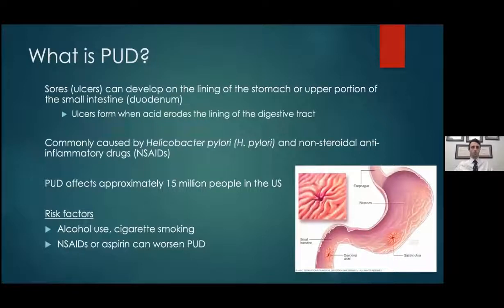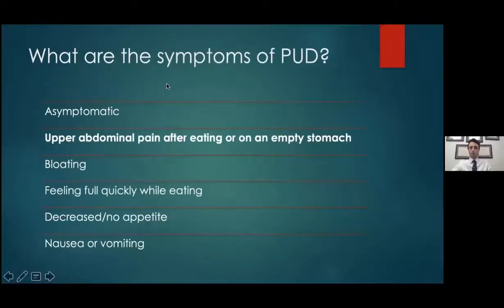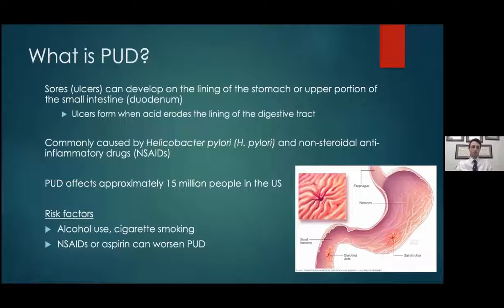What is peptic ulcer disease? Ulcers can form anywhere in the GI tract, but here we're talking about ulcers that develop in the lining of the stomach or the first portion of the intestine — the duodenum — occurring when acid erodes the lining of the GI tract. There are two major causes: H. pylori (Helicobacter pylori), which is a bacteria, and NSAIDs — non-steroidal anti-inflammatory drugs — things like Advil, Aleve, Motrin, and Naproxen. Peptic ulcer disease is very common, affecting about 15 million people in the U.S. Additional risk factors include alcohol and tobacco use.